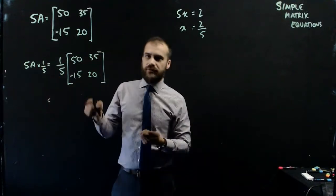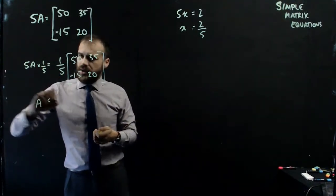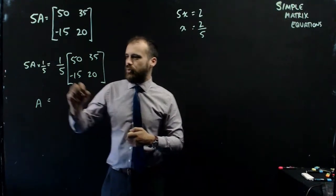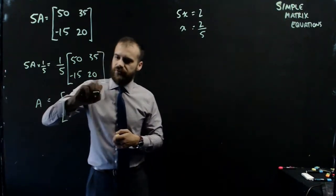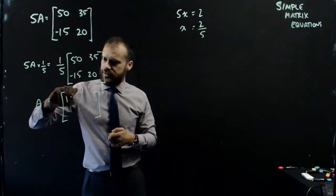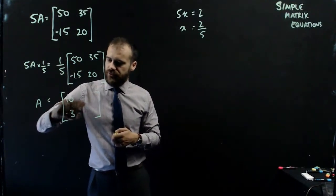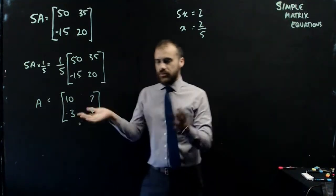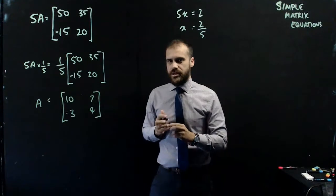All right, so 5A times 1 fifth is just A. And 1 fifth times that matrix, we multiply everything in the matrix by 1 fifth. So 50 times 1 fifth is 10, negative 3, 4, and 7. So we've solved our simple matrix equation.